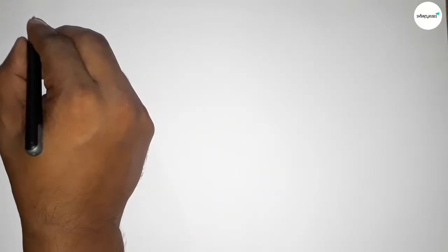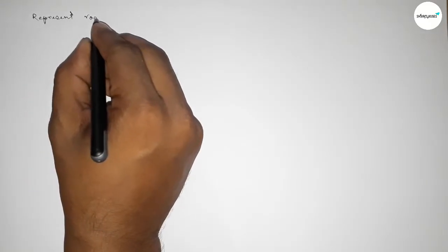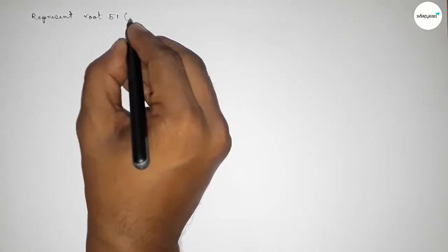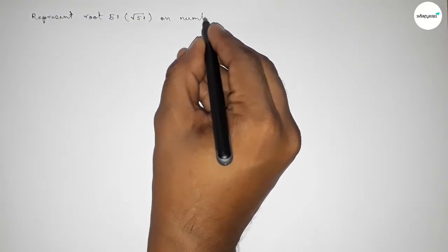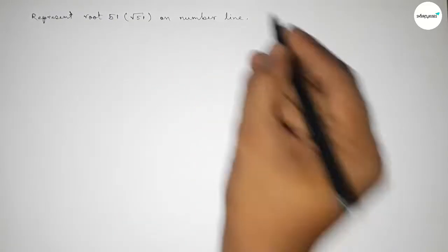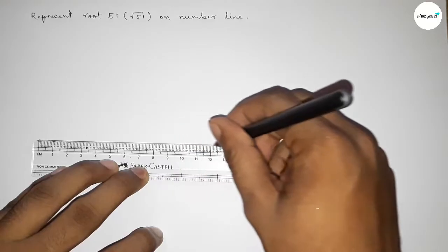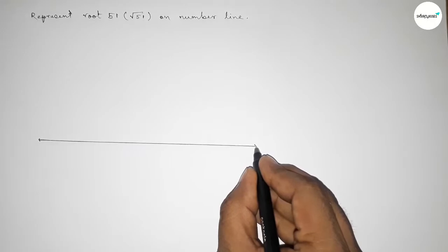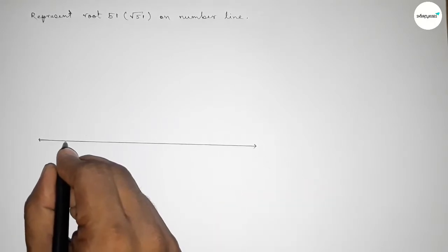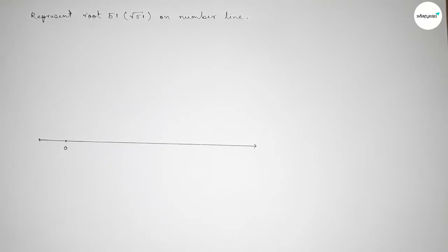Hi everyone, welcome to SI Share Classes. Today in this video we have to represent root 51 on a number line. Let's start the video. First of all, we have to draw a number line — drawing here a line of any length, taking arrow marks on both sides, and taking the starting number zero.